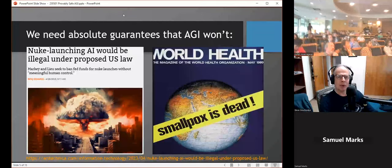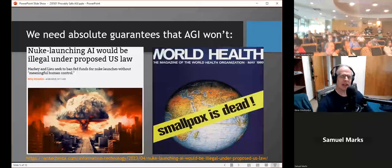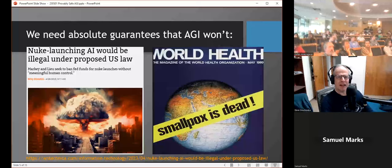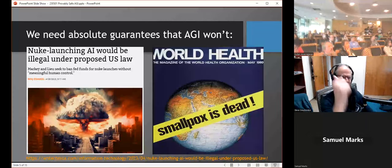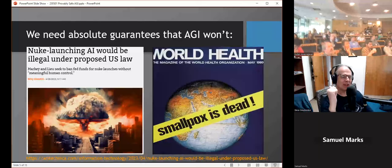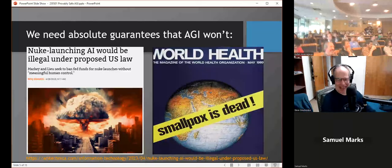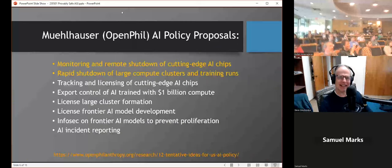So what bad things do we need to avoid? Well, things which are potentially existential risks like setting off nukes or releasing biohazards like smallpox. Fortunately, some governments have recently said that AI should not be able to independently launch nukes on their own. Great. But we need absolute technical guarantees of that. And so how do we do that? That's the question I would like to consider.